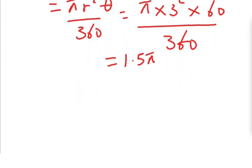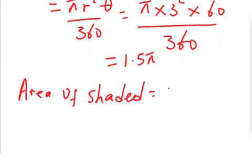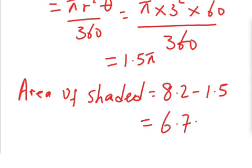Since the area of the small sector is 1.5 pi and the area of the big sector is 8.2 pi, the area of the shaded portion is 8.2 pi minus 1.5 pi, which gives us 6.7 pi. So 6.7 pi is the area of the shaded portion.